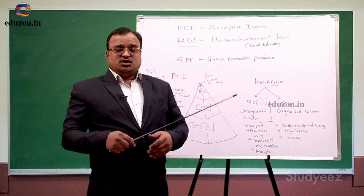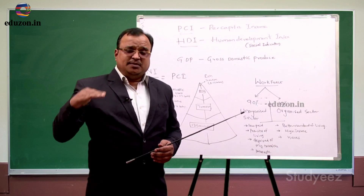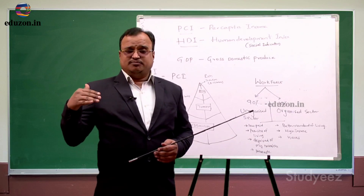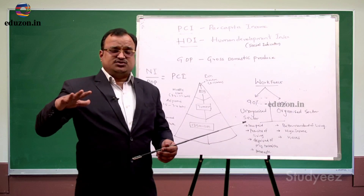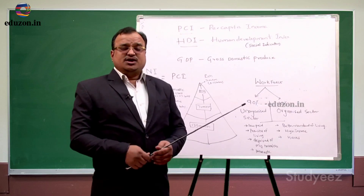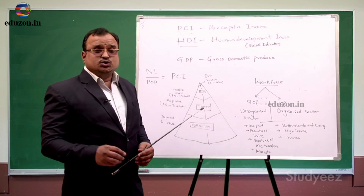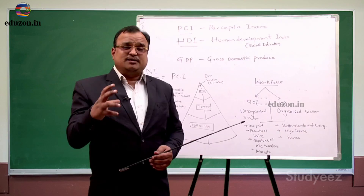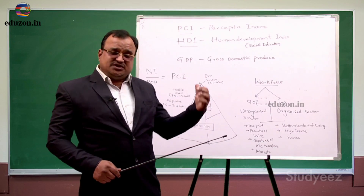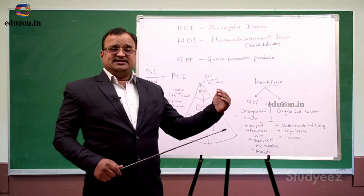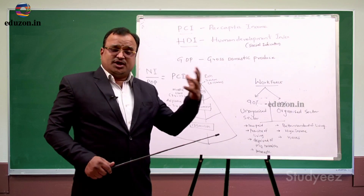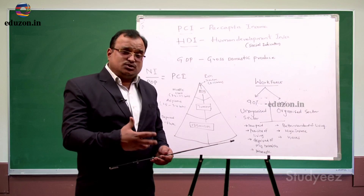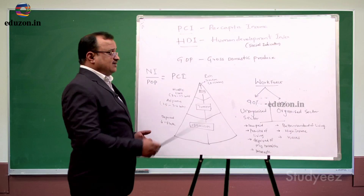HDI not only looks at economic growth, but also examines what basic minimum facilities the citizens of that country enjoy. When you judge whether country A or country B is developed, you should not look only at per capita income — you should also see the HDI rank of that country, which will give a clear picture of what facilities citizens are availing, the literacy rate, the urbanization ratio, and other social development aspects.